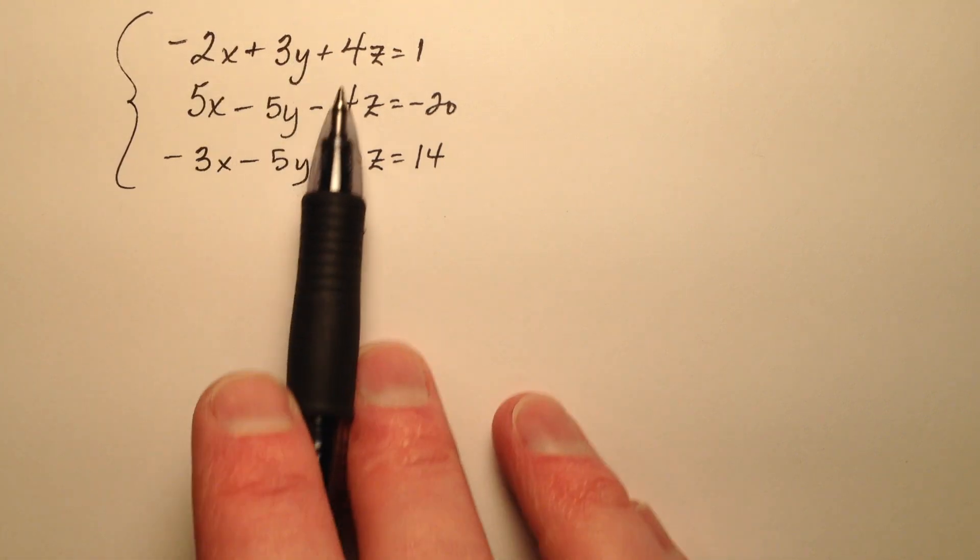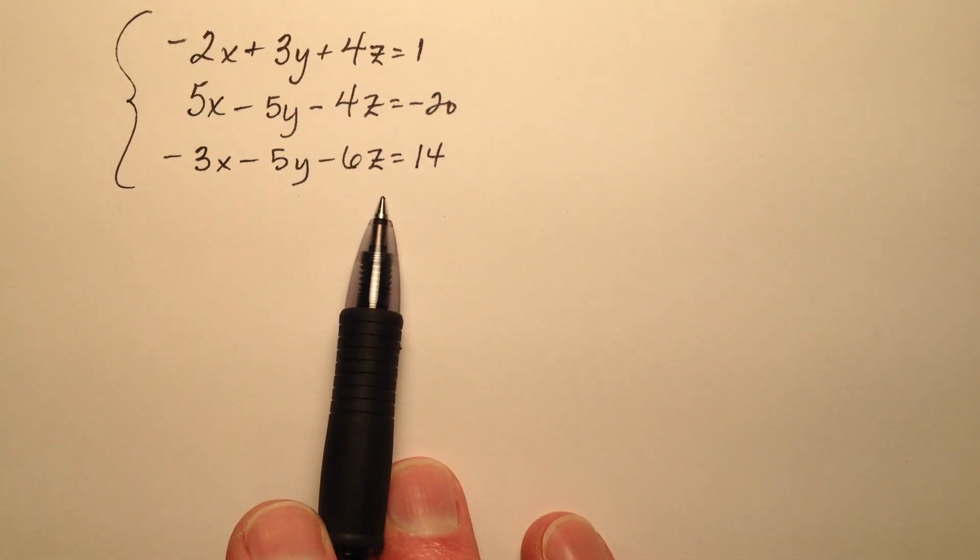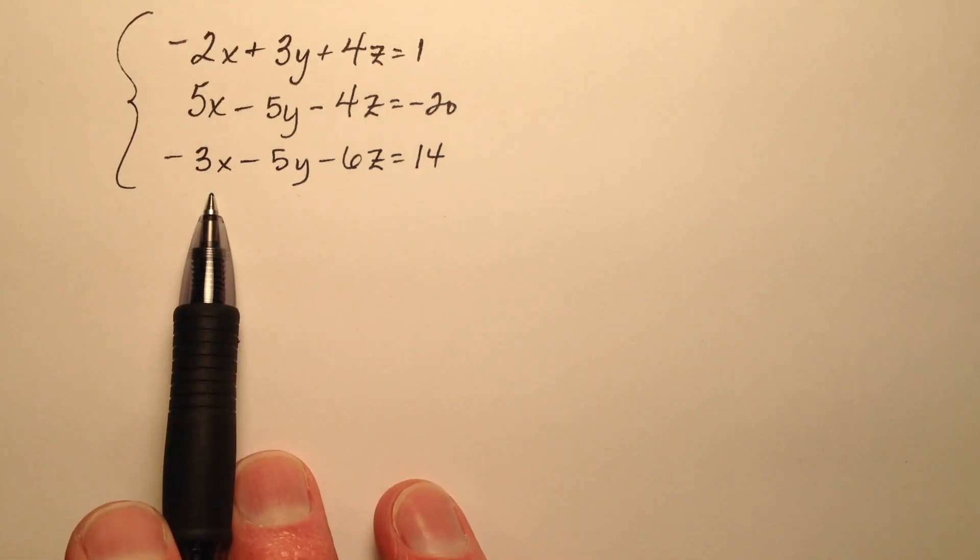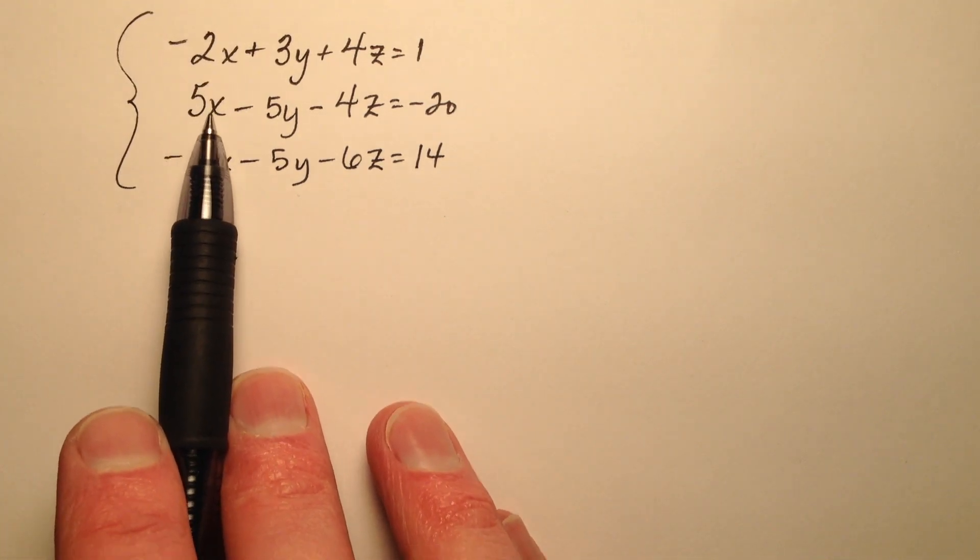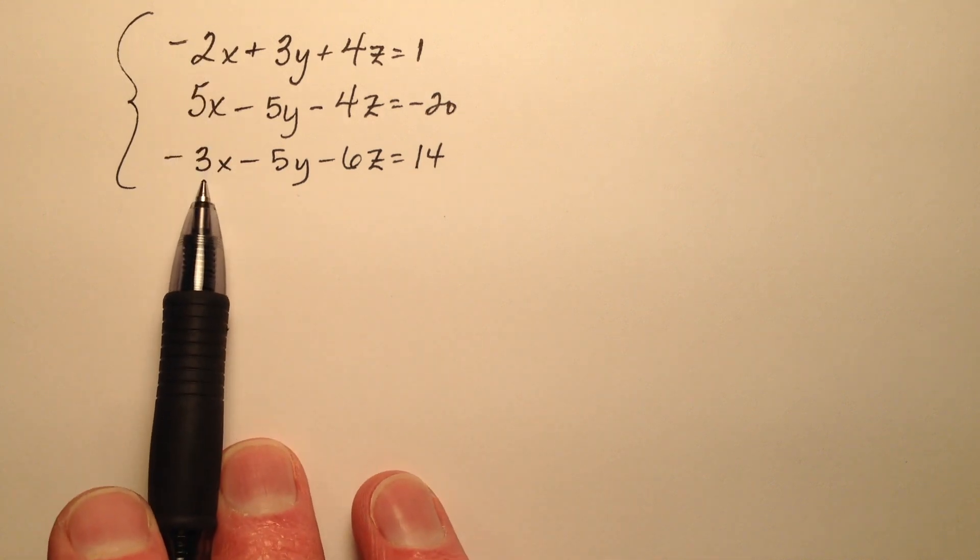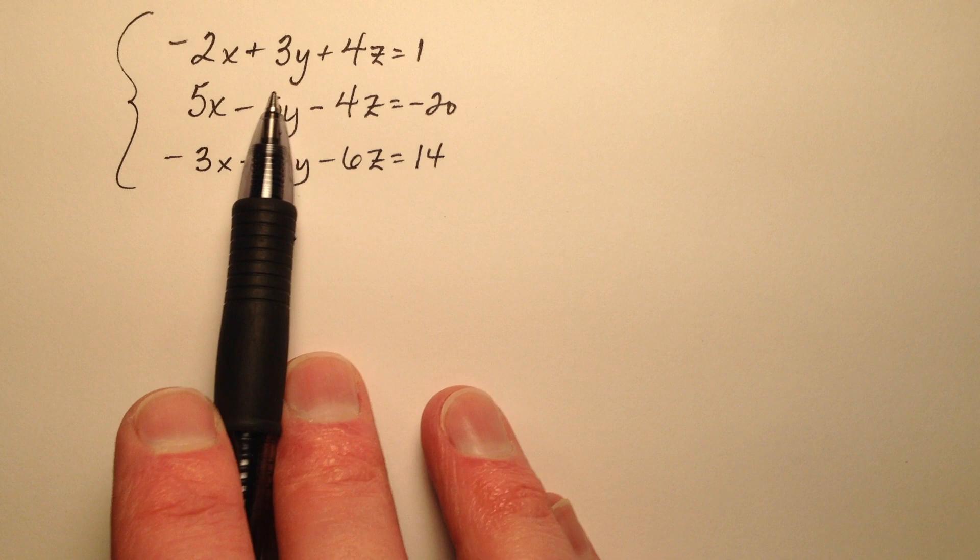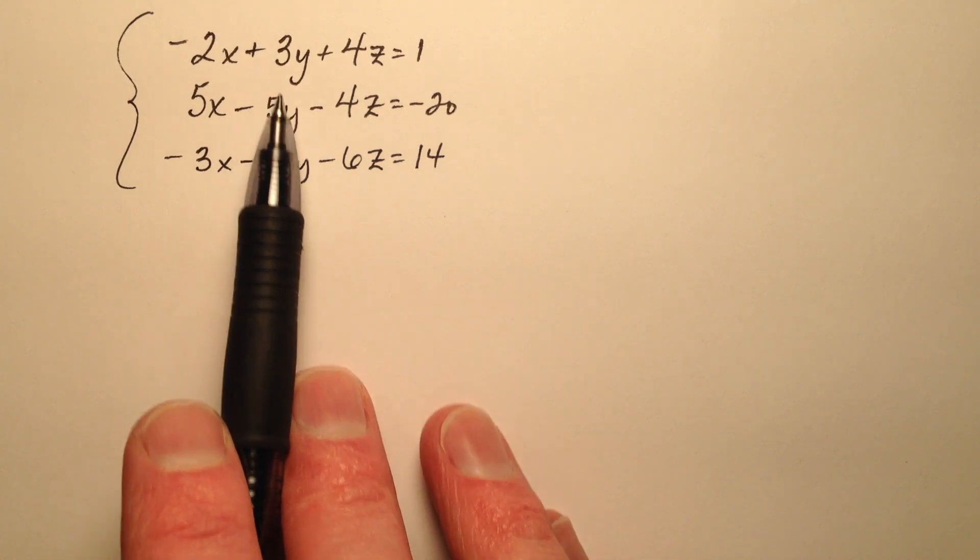So we need to choose one of these variables that seems to be a good candidate for elimination. When I look at the first one, the x's, I have a 2 and a 3 and a 5, which don't really work, none of those are factors of one another. For the y's, 3 and 5 and 5, well, the 5's might go nicely, but the 3 not so much.